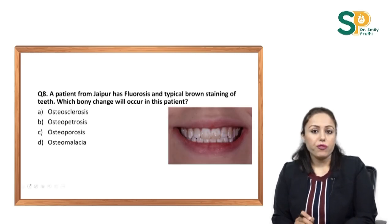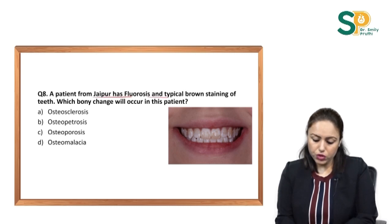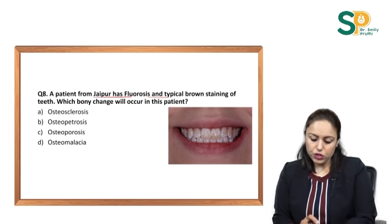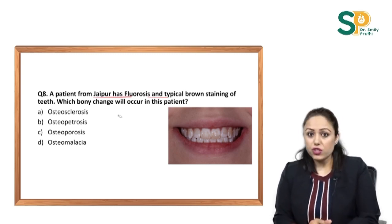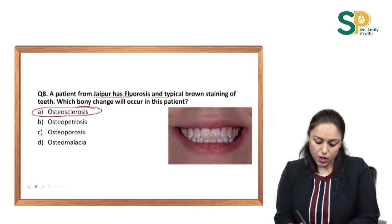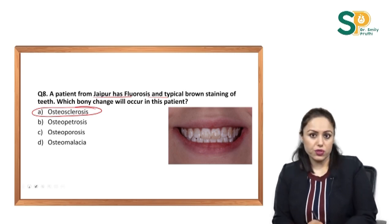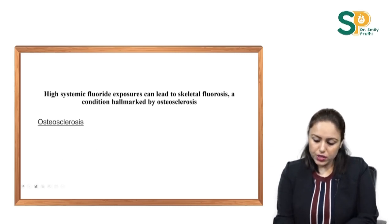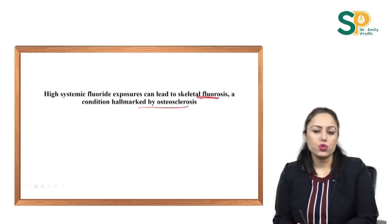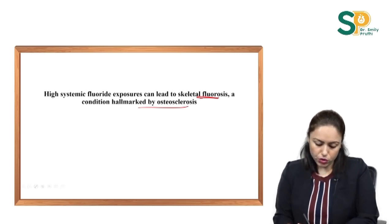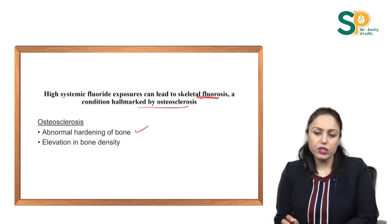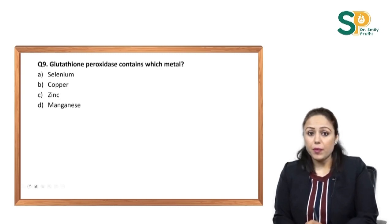A picture of fluorosis teeth is given: a patient from Jaipur with fluorosis and typical brown staining of teeth — which bony change will occur? The bony change in fluorosis is osteosclerosis. High systemic fluoride exposure can lead to skeletal fluorosis, hallmarked by osteosclerosis, which involves abnormal hardening of bone and elevation of bone density.